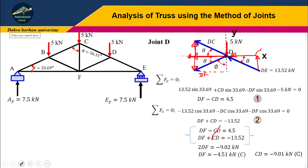I recommend you try joint C yourself using similar procedure. You'll find CF equals 5 kilonewtons tension. We have analyzed half of the truss. What about the remaining members? Simply mirror the results. Member AB equals member DE, AD equals DE, AF equals EF, BC equals CD, and BF equals DF.